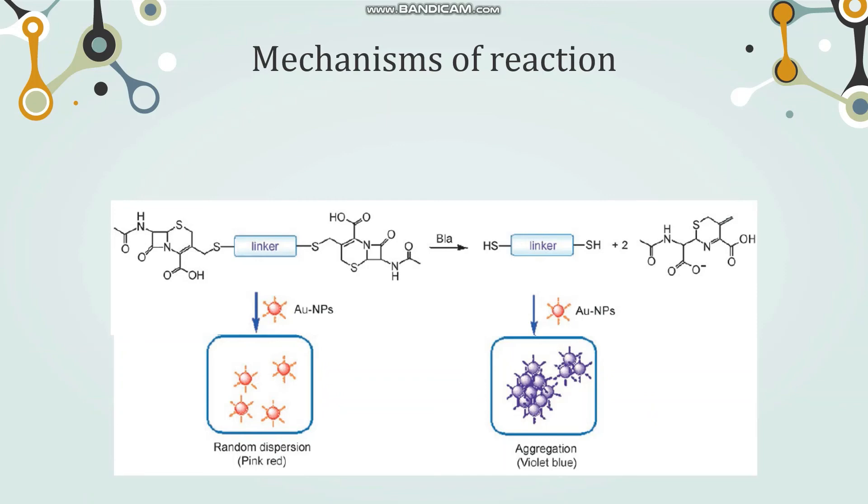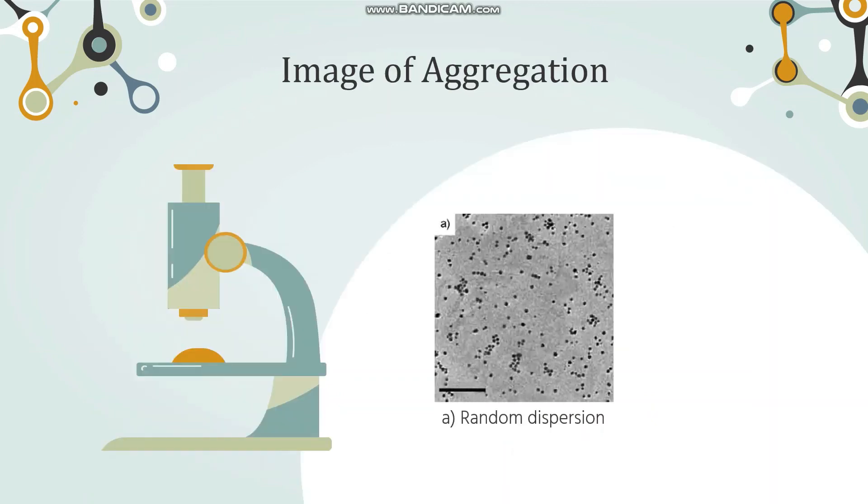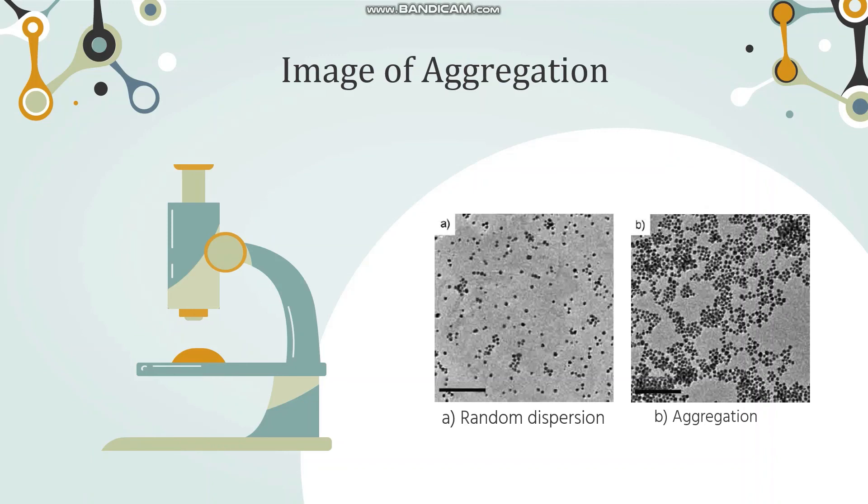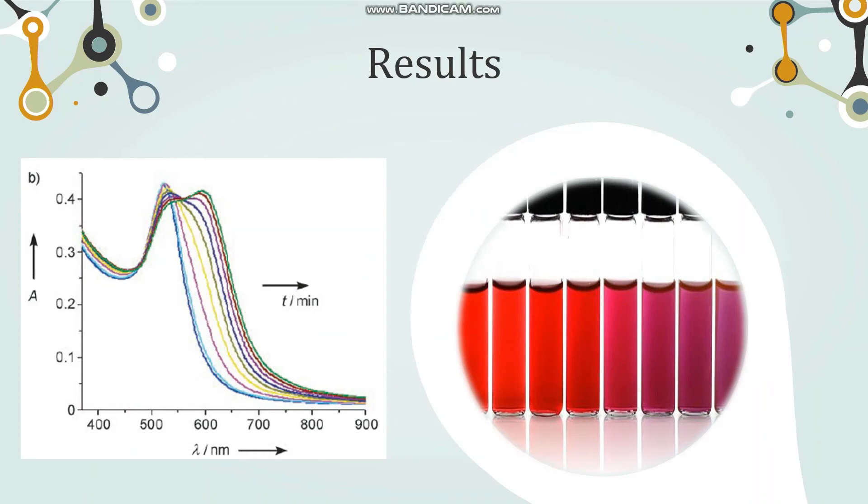These are the images of solutions with and without the beta-lactamase. We can clearly observe the aggregation in this solution where beta-lactamase is present. This graph was adapted from the research finding. It is evident that as time increases, the aggregation increases and it can be tracked clearly by using UV-vis spectroscopy.